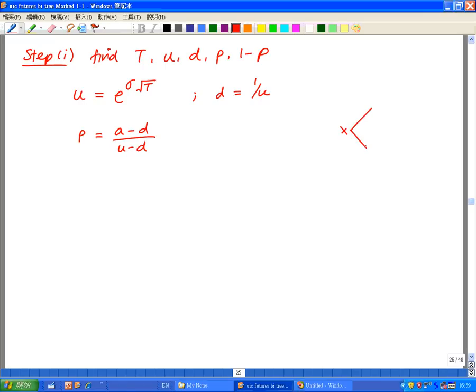One will be the stock price going up. So x will be our initial price times u. If the stock price go down, it will be x times d. So here, we know how much they move up to, but we don't know the probability yet. So this is the probability of the stock price making an up move. And 1 minus p would be the probability of the stock making a down move.